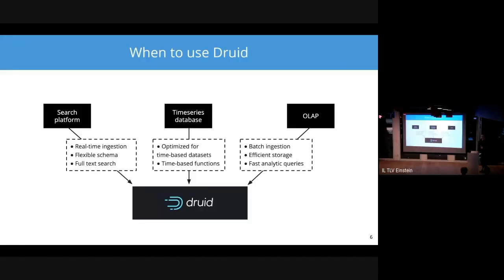First up, determining if Druid is the right solution for you. Druid does a lot of things really well. It pulls from the best features of an OLAP system, a time series database, and a search platform. So if you have data that is organized around time, if you are doing slicing and dicing of that data for user-facing analytics, and if you're doing full text search, these are all markers of a good use case for Druid.